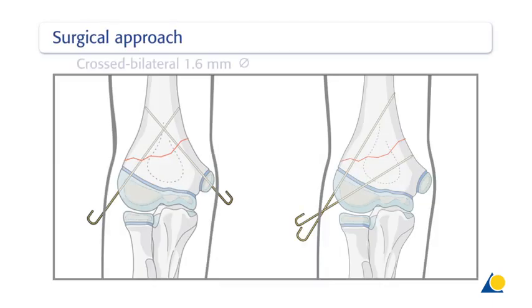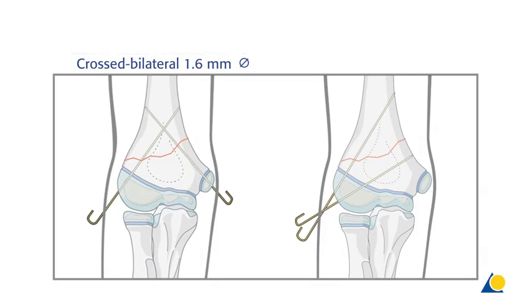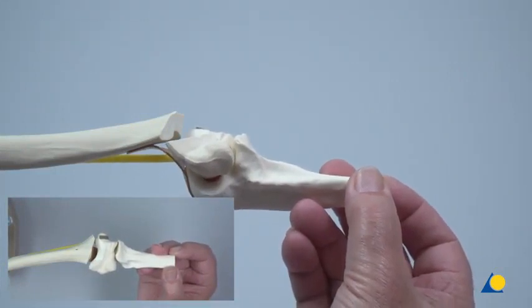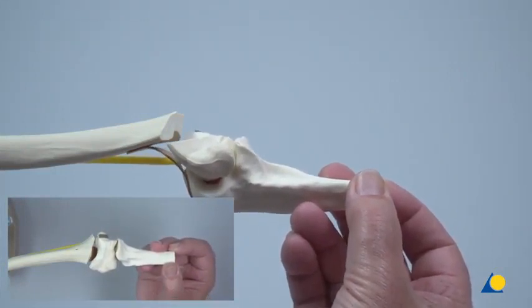The surgical approach to both the crossed bilateral 1.6 mm K-wire fixation and the divergent radial 2 mm K-wire techniques require stab incisions or a direct puncture with the guide wire at their respective entry points. In the clinical situation, closed reduction under image intensification would be performed on this type of fracture.